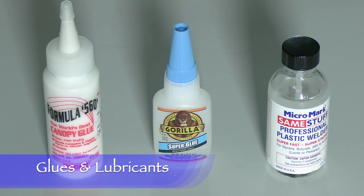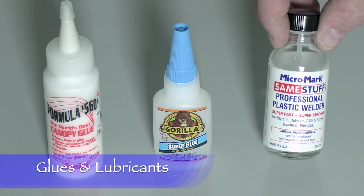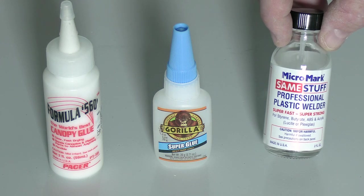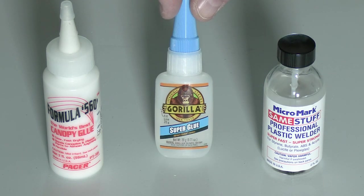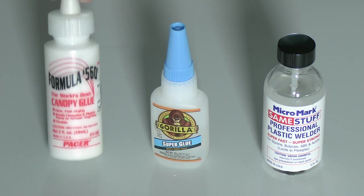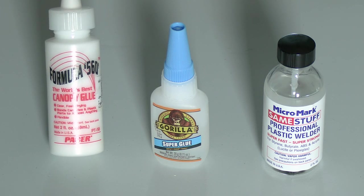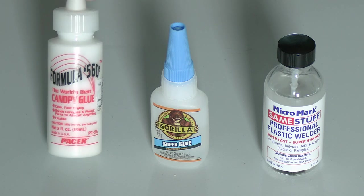I have three different types of glues with me. This is Same Stuff by Micromark, a liquid styrene cement good for plastic to plastic joints. This is super glue, good for general purpose bonding. And this is canopy glue, also general purpose, really good for parts that need to be removable or for clear parts.